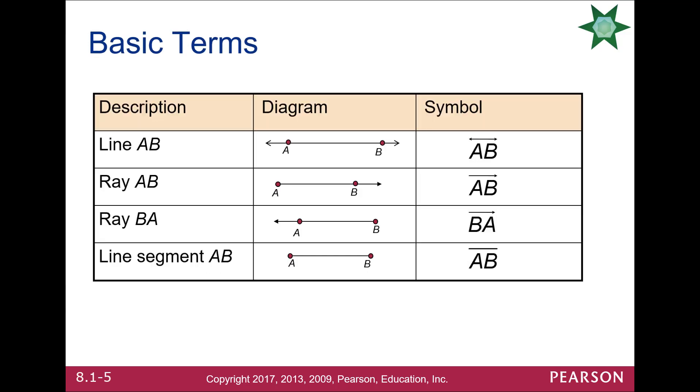So let's take a look at the picture here. A line AB is going to have arrows at both ends. Like, you'll notice this has arrows at both ends of it, going on indefinitely. The symbol is correspondingly so, arrows at both ends. A ray will have one endpoint going through the other point and continuing on. Same with the symbol.